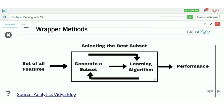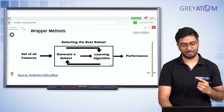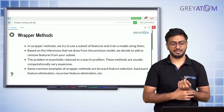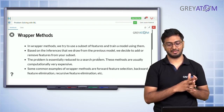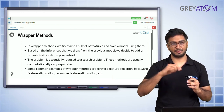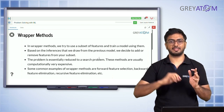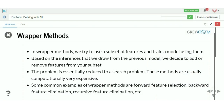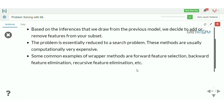In wrapper methods, feature selection is not one-time. You start with all features, see which performs worst, remove it, recheck performance, and keep doing this recursively. You could also start with no features and add them one by one. The goal is to find the optimal combination of features that maximizes model performance.